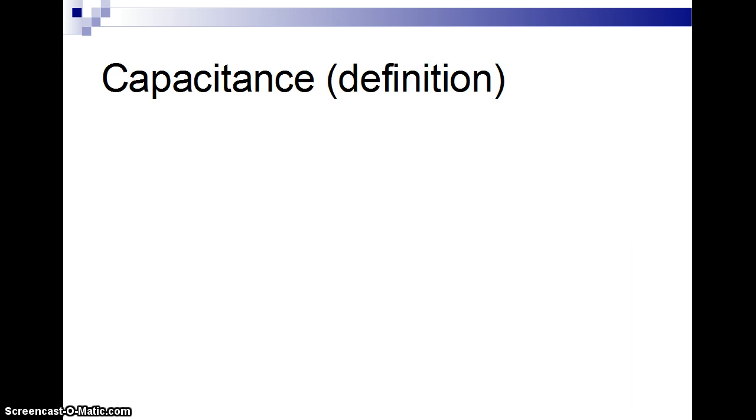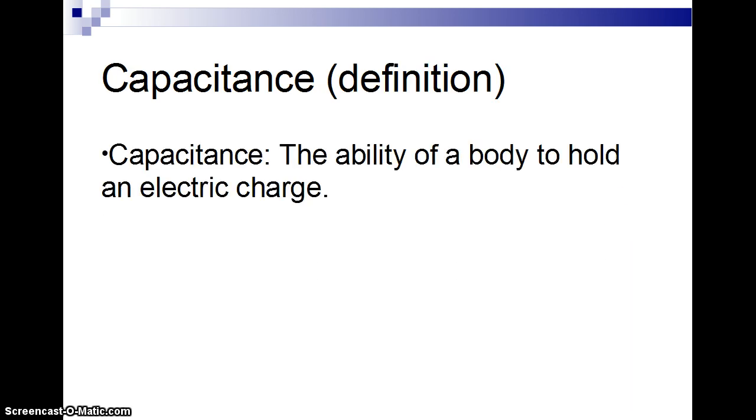All right, so the definition of capacitance. Capacitance is basically the ability of a body to hold an electric charge, just the capacity of an object to hold electric charge at a given voltage. You give the charge a certain amount. The charge is a certain amount of energy. And you can hold them in place.